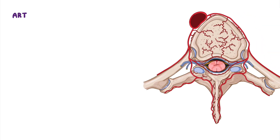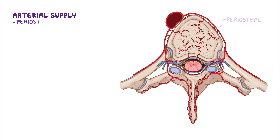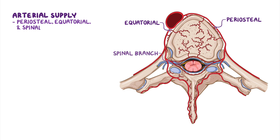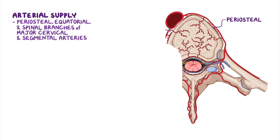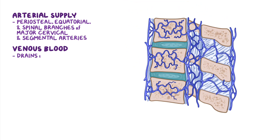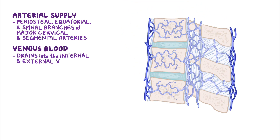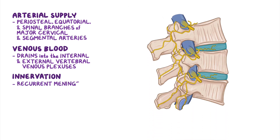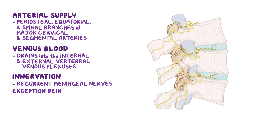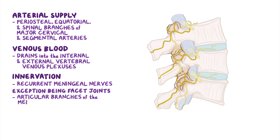As a quick recap: the vertebral column's arterial supply comes from periosteal, equatorial, and spinal branches of the major cervical and segmental arteries. Venous blood drains into the internal and external vertebral venous plexuses. The majority of the vertebral column is innervated by the recurrent meningeal nerves, with the exception of the facet joints, which are innervated by the articular branches of the medial branches of the posterior rami of spinal nerves.